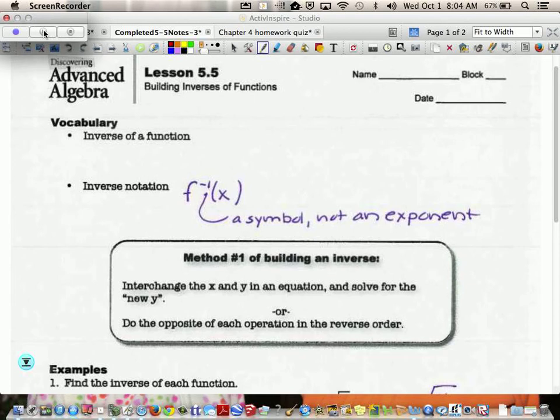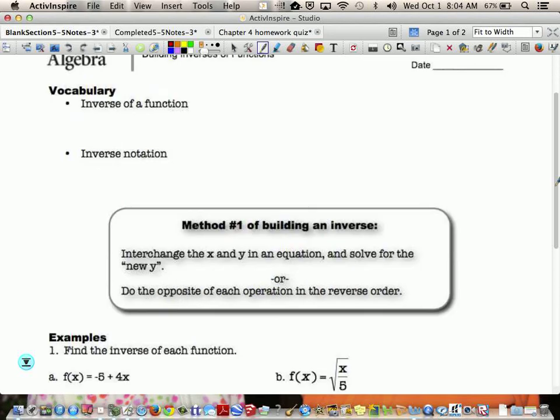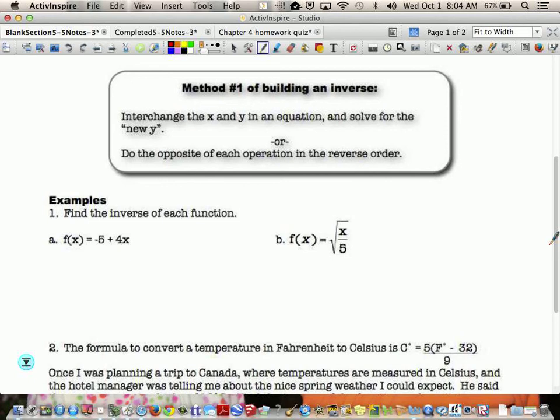So basically, the first method of building an inverse, let's look at it on this page, is to interchange the x and the y in an equation and solve for the new y. So our x and y will flip-flop and then we'll solve for y again. Do the opposite of each operation in reverse order, which is kind of a weird one.